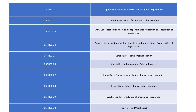GST REG-21 is the application for revocation of cancellation of registration. This is used when a registration has been cancelled or suspended by tax officers — for example due to non-filing of returns — and the taxpayer wants their GST number reinstated. This is also a frequently asked MCQ topic.